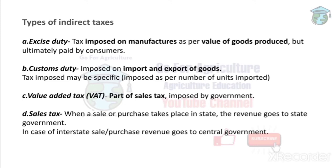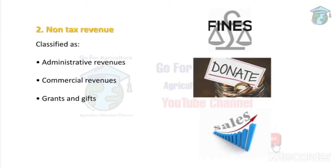Next is non-tax revenue. In tax revenue, the government gets money from sources like GST and income tax. In non-tax revenue, the government gets money from sources that are not taxes — such as fines and funds. These are good examples of non-tax revenues.